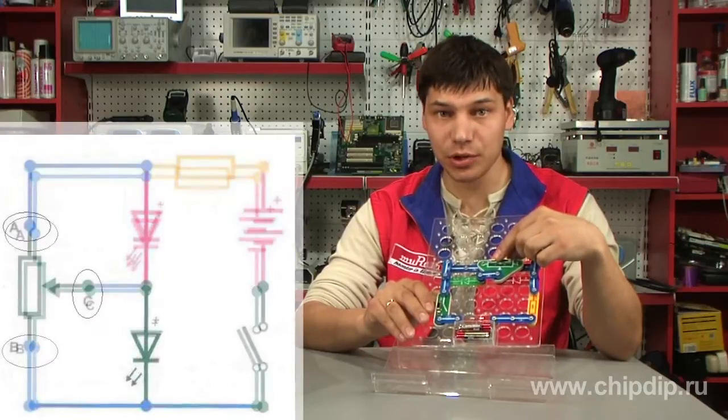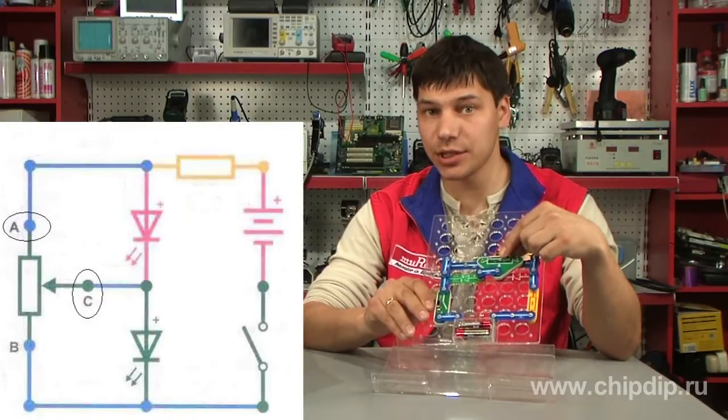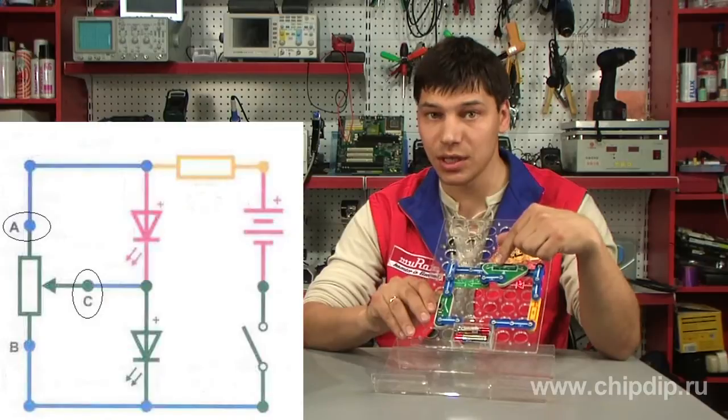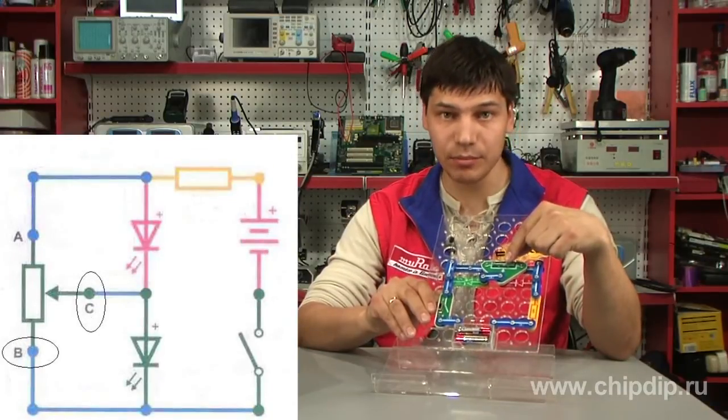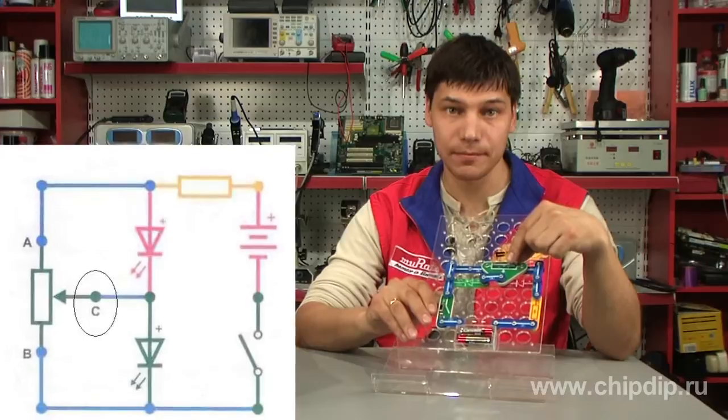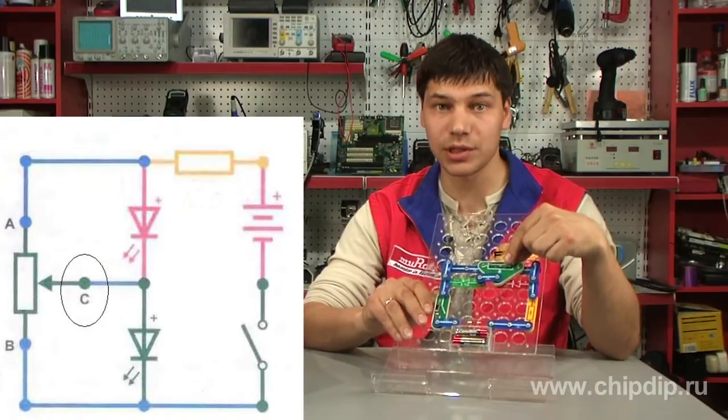By changing the position of the sliding contact, we change the ratio between resistances AC and BC, thus changing the voltage in point C and consequently the current passing through the light-emitting diodes.